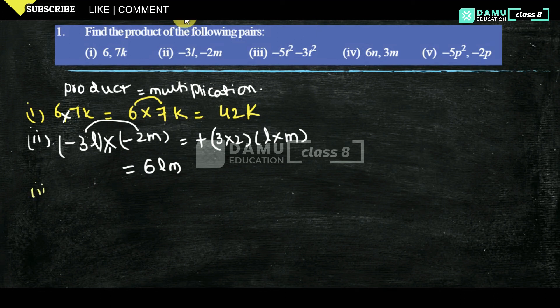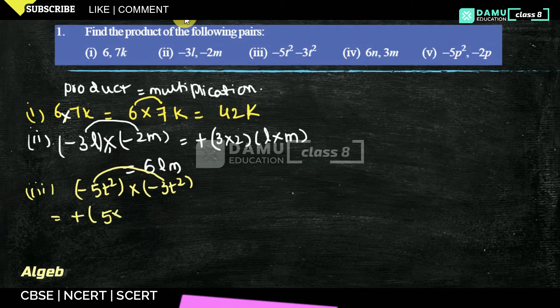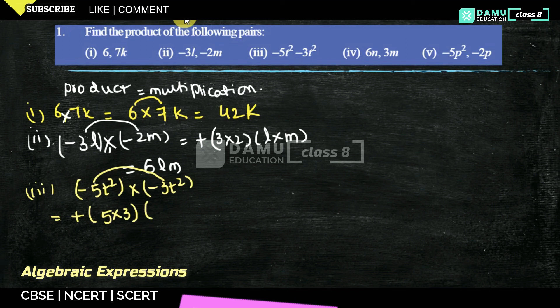-5t² into -3t². So as I told, first multiply minus into minus will become plus. 5 into 3, 5 into 3. First multiply numerals and t² into t². So 5 threes are 15.